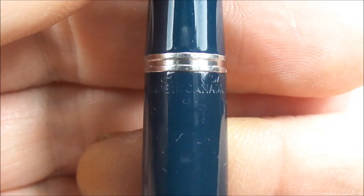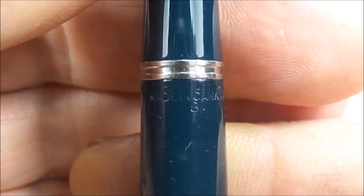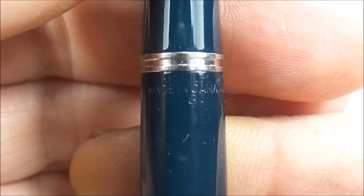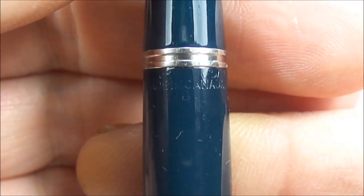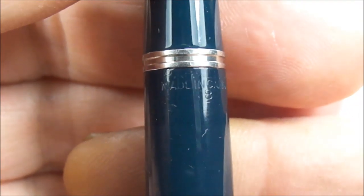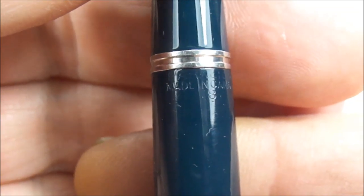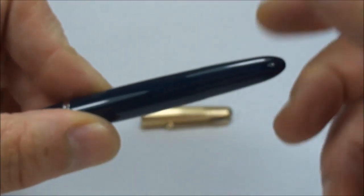And then underneath the Made in Canada, we've got the date number, which on this particular one, as we said before, is the number 8 with three dots, which indicates it's the first quarter of 1948. So you can see the whole pen is actually correctly dated. All in all, a beautiful example.